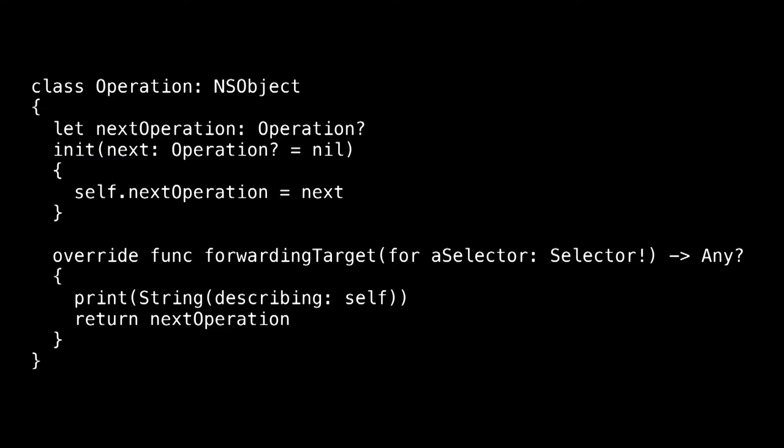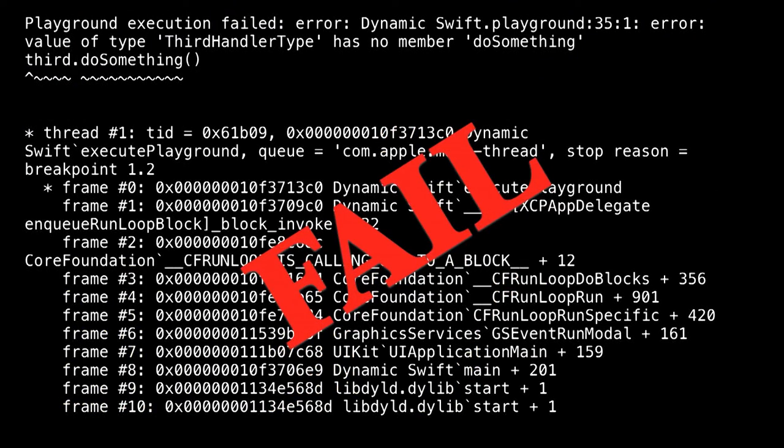You might see something pretty familiar here: forwarding target for selector. This is right out of the NSObject API, and it lets you specify a next target in case this particular object doesn't implement that message. We have some debugging things to see if the demo actually works. When I want to call something on the third object that doesn't have the do-something method implemented, what actually happens — if I'm doing this in Playgrounds — is a nice big demo fail.